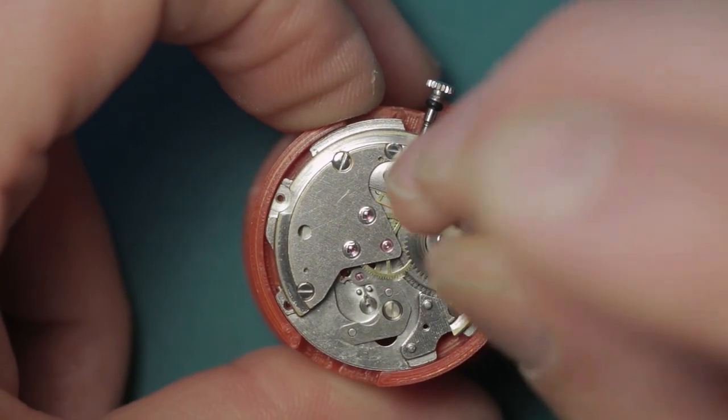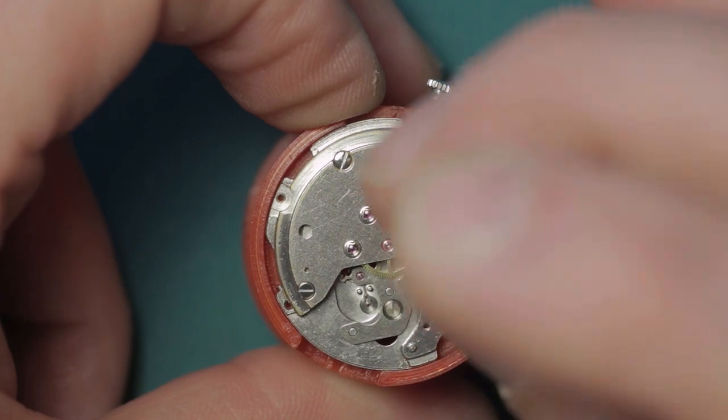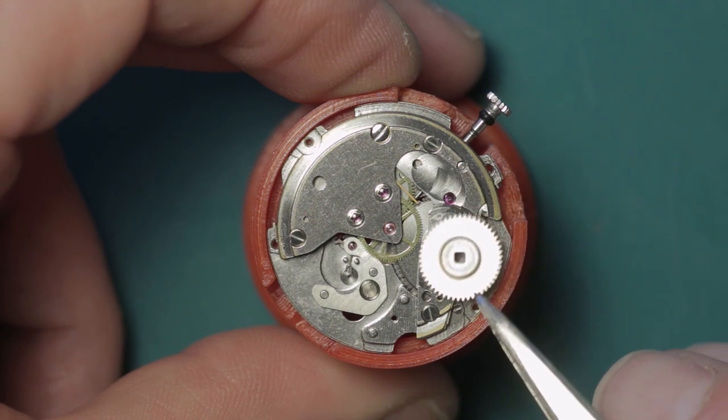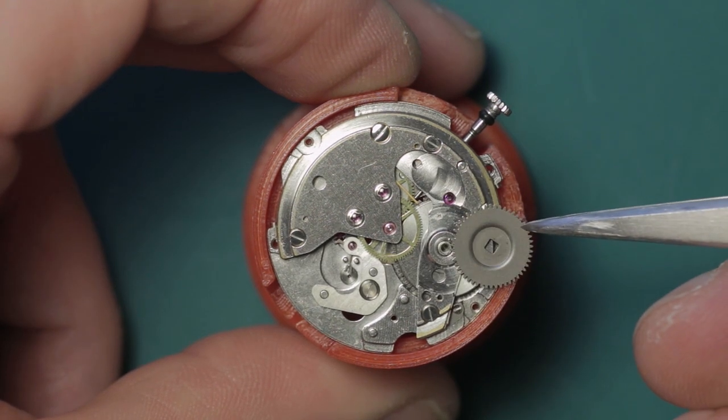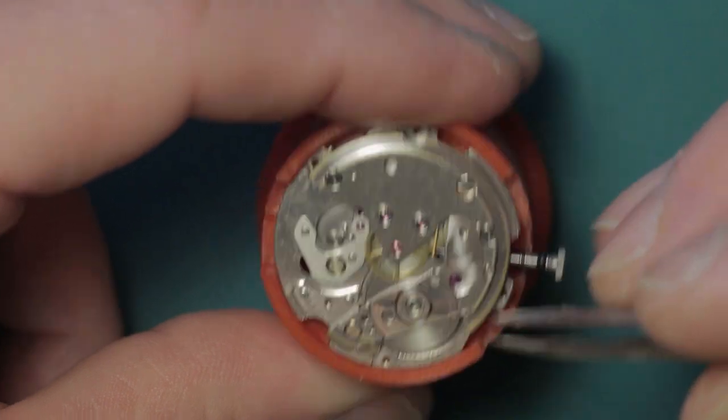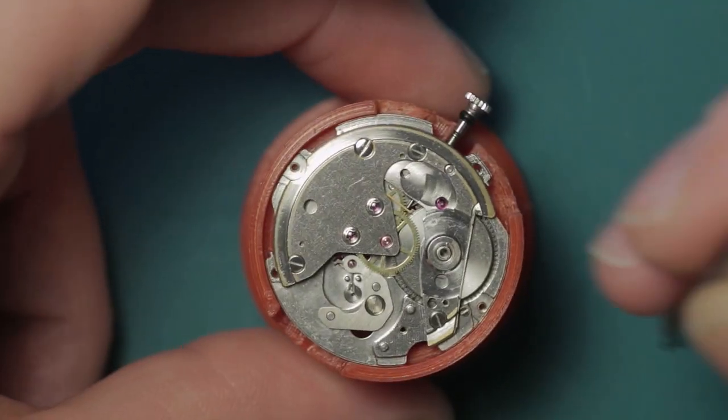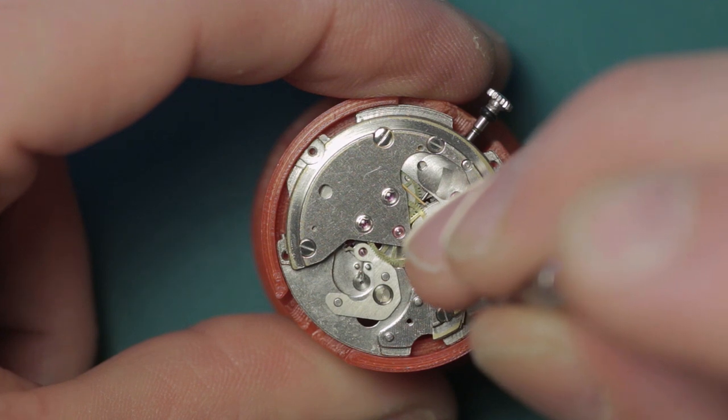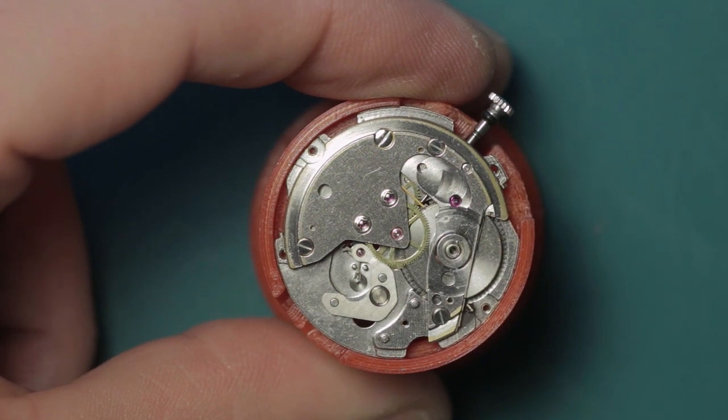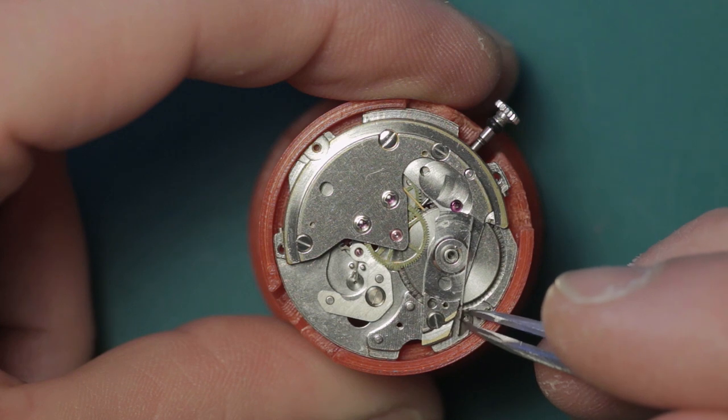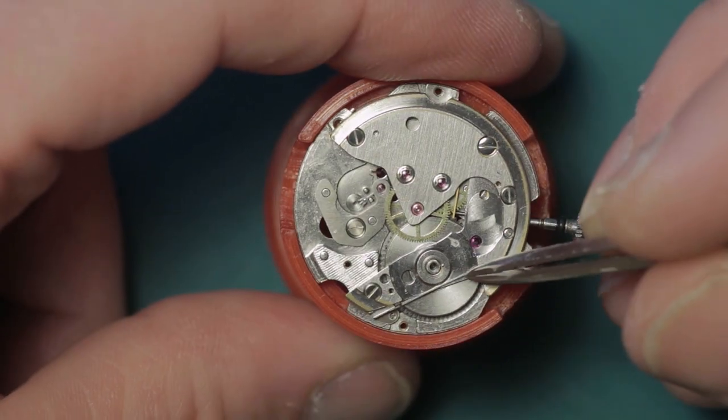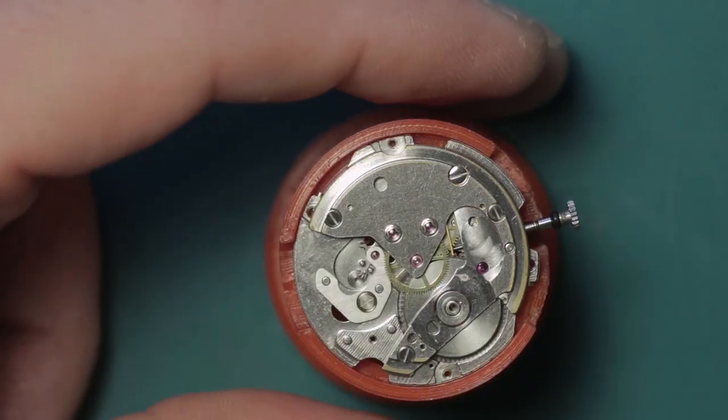First thing to be removed is the ratchet wheel, which is a dished ratchet wheel as you can see there. The click can follow that, and the design of the click and click spring is a combined one, common to many Seiko models. If you've stripped a few Seiko models you will recognize the design of that.